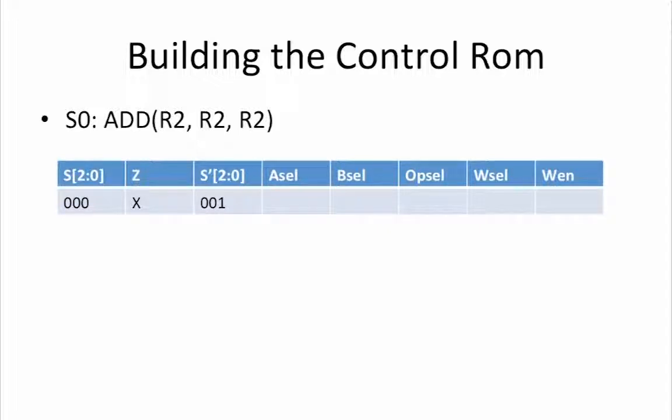Our register select signals each need to select one of four registers. This means that these signals must each be 2 bits wide. Our Asel control signal identifies the register that should be used as input A. This register is R2, so Asel is 10. Bsel identifies the second source operand. In this case, it is also R2, so Bsel equals 10 as well.